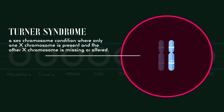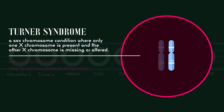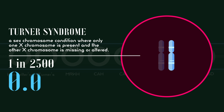The missing or altered X chromosome affects development before and after birth, most often leaving affected females with a loss of ovarian function and mild to serious physical differences. Turner Syndrome is one of the more common DSDs, affecting about 1 in 2500 newborn girls, a rate of around 0.04% of births.